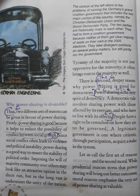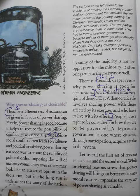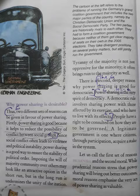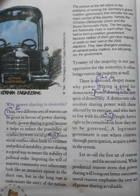Dono countries ka approach power sharing ki taraf alag-alag tha. Belgium ne accommodate kiya aapas ke differences ko — majority aur minority ne adjust kiya ek dusre ke saath, wahaan koi issue nahi hua. They even changed their constitution to accommodate each other. The other country, Sri Lanka — the majority community refused to cooperate with the minority, and the result was a severe civil war which took thousands of lives.